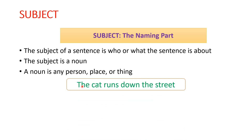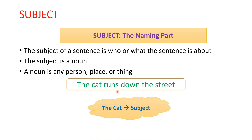Let's consider the same example: 'The cat runs down the street.' Here, the cat is the thing — that means it is an animal. So, the cat is the subject. This is what the sentence is about.